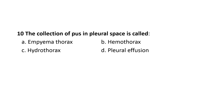The collection of pus in the pleural space is called empyema thorax. Hemothorax — hemo means blood — is the collection of blood in the thorax. Hydrothorax — hydro means water — is the collection of water in the thorax. Pleural effusion is the collection of fluid in the pleural space.